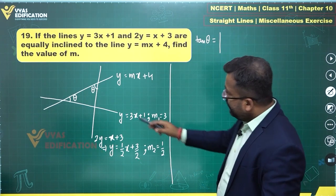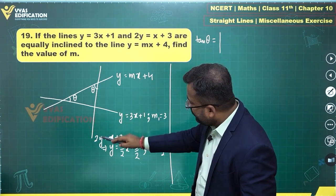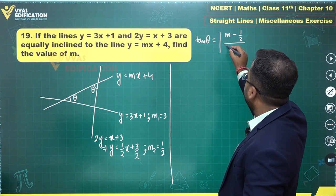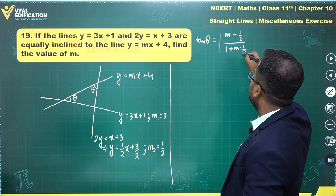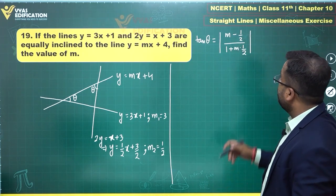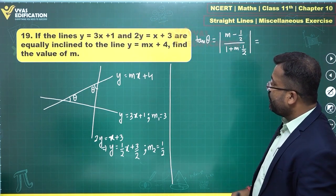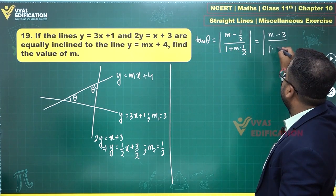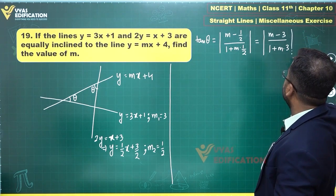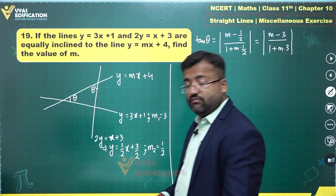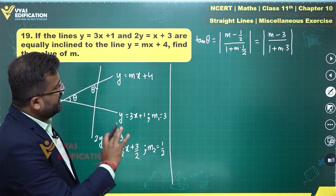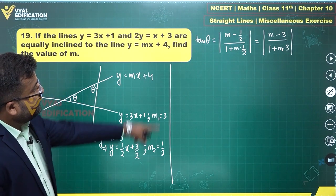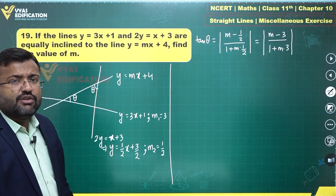tan θ equals the modulus of (m − m2) / (1 + m·m2), which is |m − 1/2| / |1 + m·(1/2)|. This can also equal |m1 − m| / |1 + m1·m|, which is |m − 3| / |1 + 3m|. The angle is θ in both cases, so I can write this expression and solve the resulting equation for m.